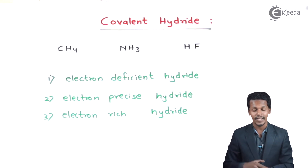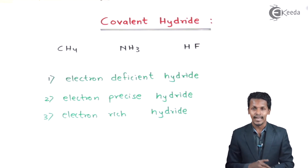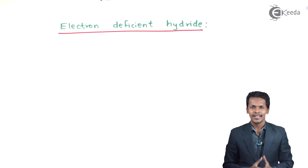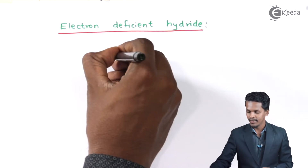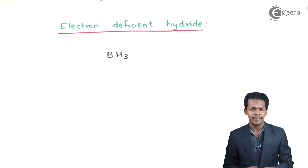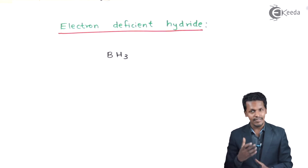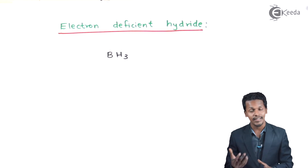So these are the three classifications of covalent hydrates. Let us discuss each with examples for better understanding, starting with electron-deficient hydrates. An example is BH3 — boron hydride. The central atom here is boron. Let us discuss the electronic configuration of boron first, so we can determine whether it is electron-deficient, rich, or precise.